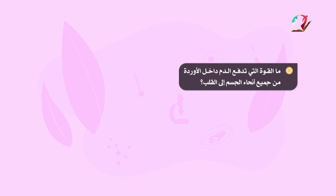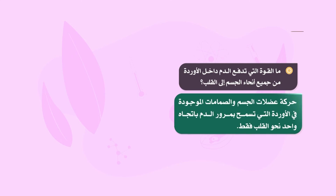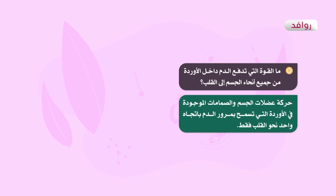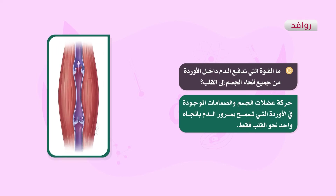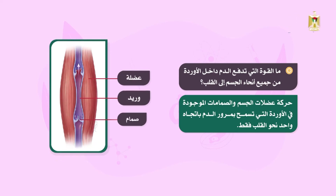ما القوة التي تدفع الدم داخل الأوردة من جميع أنحاء الجسم إلى القلب؟ يتحرك الدم في الأوردة بمساعدة حركة عضلات الجسم والصمامات الموجودة فيها، حيث تضغط عضلات الجسم على الأوردة فيتحرك الدم، وتساعد الصمامات على مرور الدم باتجاه واحد نحو القلب فقط وعدم عودته.